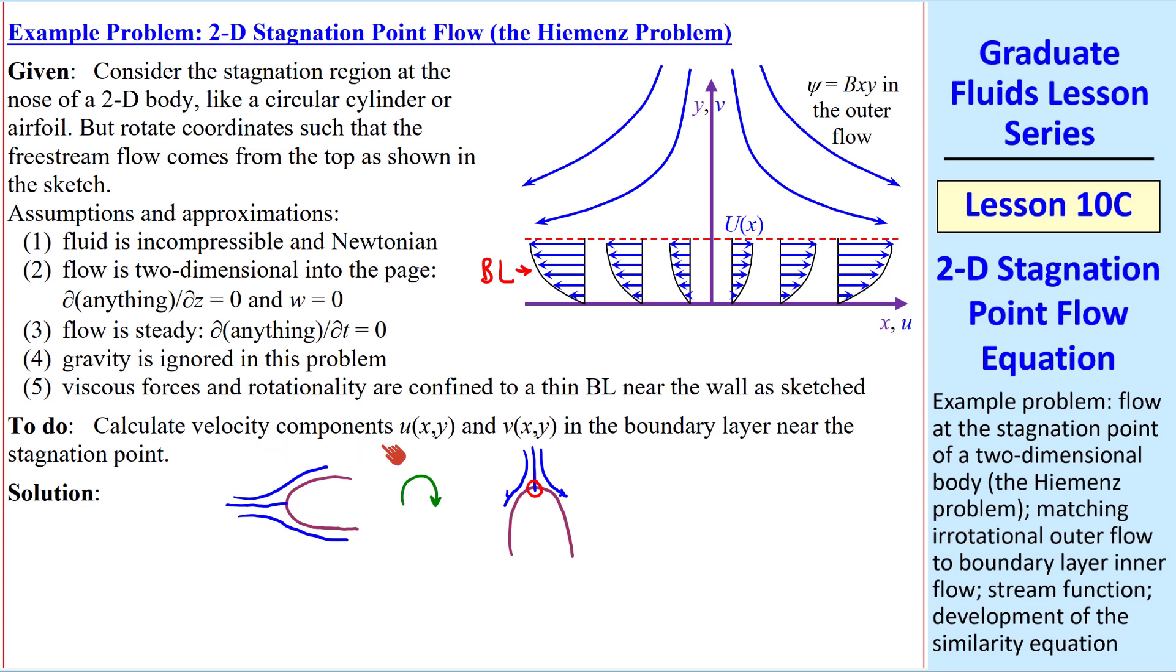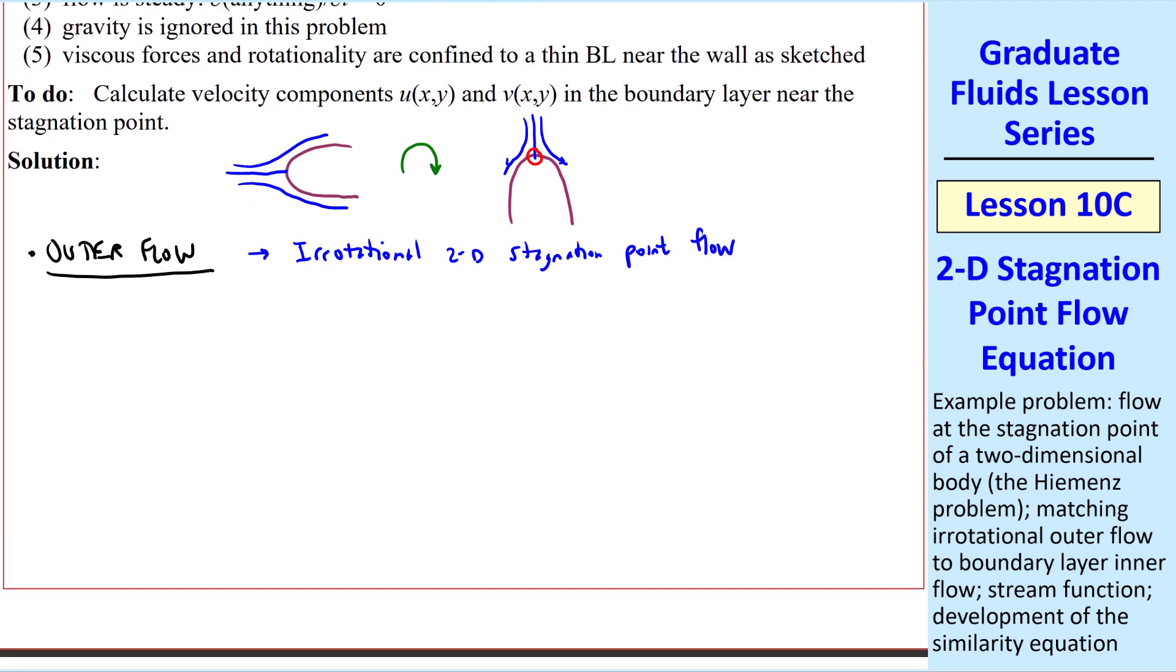Our goal is to calculate the velocity components u(x,y) and v(x,y) within this boundary layer. We begin with the outer flow outside of the boundary layer, which we'll take as irrotational 2D stagnation point flow, where the streamlines look like this. We've already discussed this flow in a previous lesson, when we talked about complex potentials.